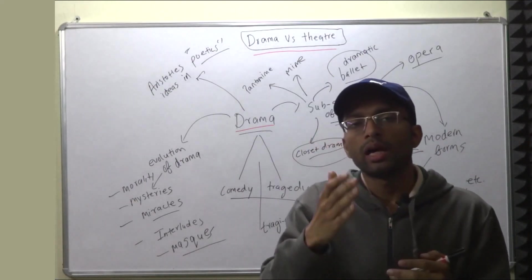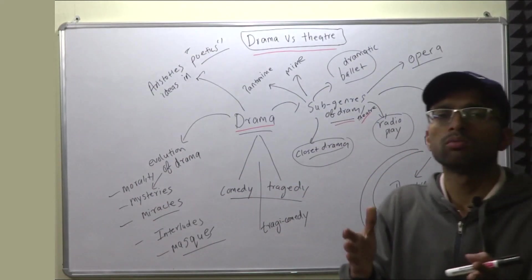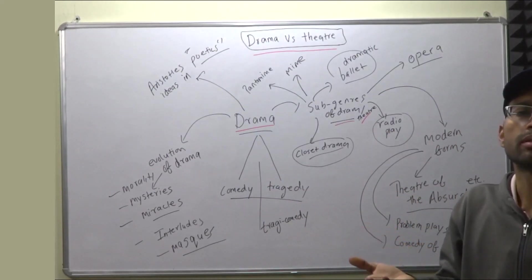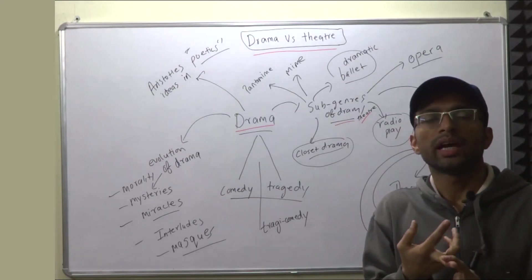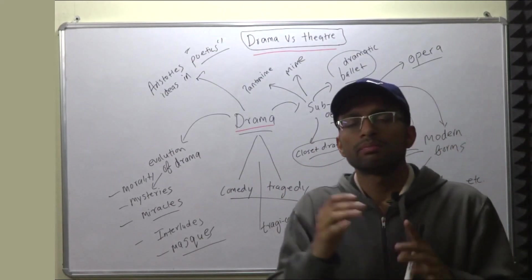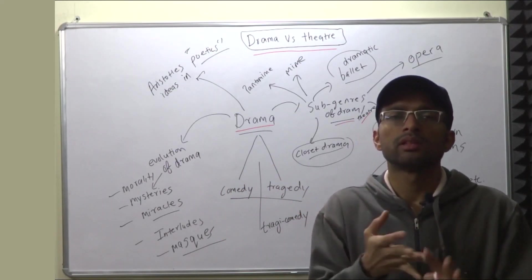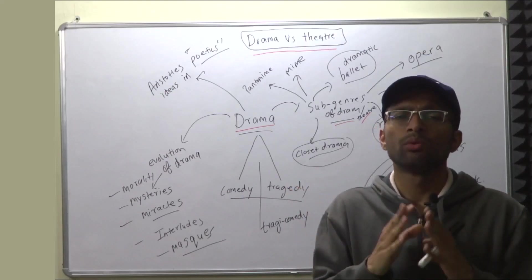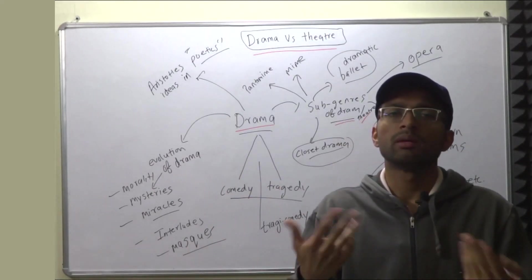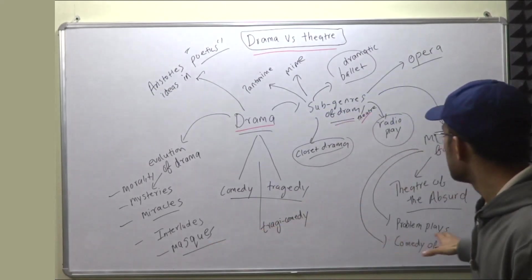Let's come to some modern forms of drama, because drama has evolved over the years. Theater of the Absurd is very famous — after World War II, this was the major innovation in the field of drama. When we study Theater of the Absurd, the names that come to mind are Samuel Beckett, Eugène Ionesco, and Harold Pinter. After that, Problem Plays basically deal with and point out some kind of problem in a society — G.B. Shaw and Henrik Ibsen are the most famous names in Problem Plays. Then, Comedy of Humors is related to Ben Jonson, a contemporary of Shakespeare. You should know what Comedy of Humors is, why it is called that, and some examples of all these forms.